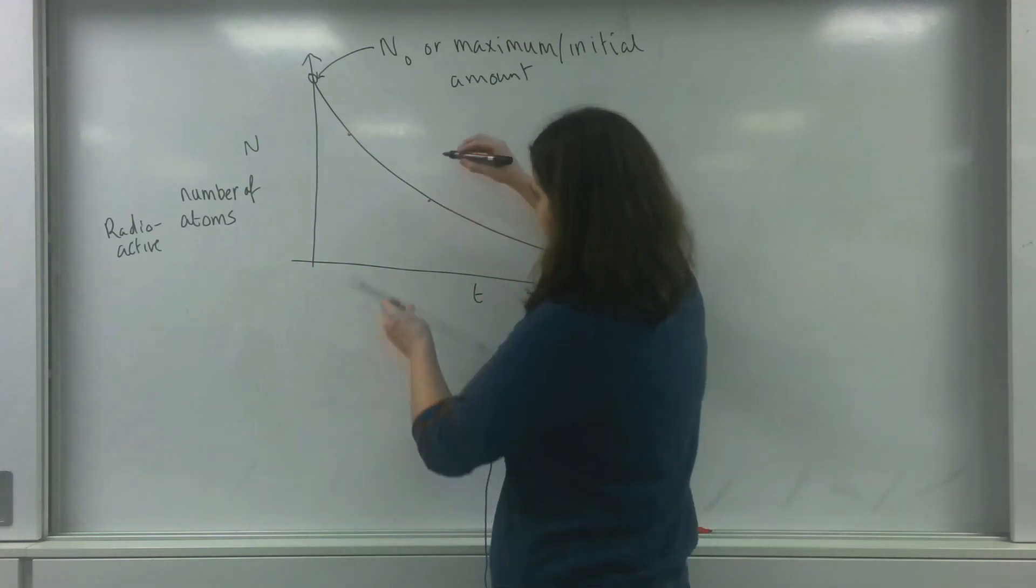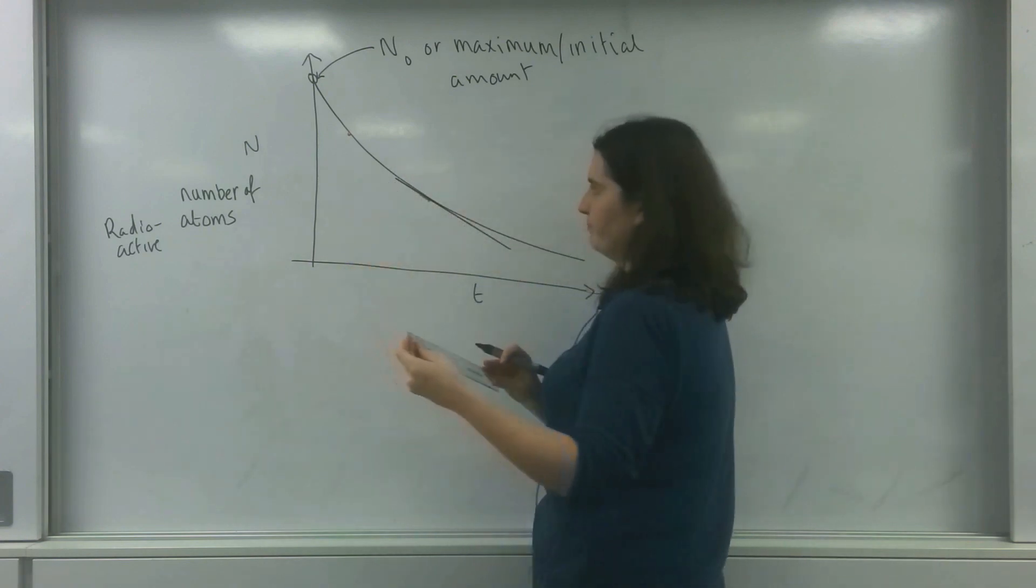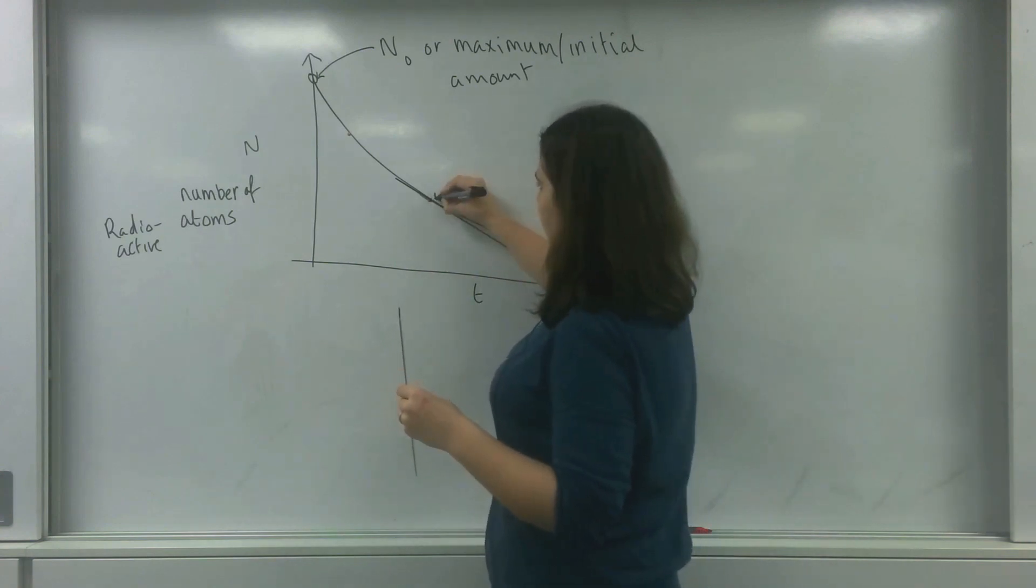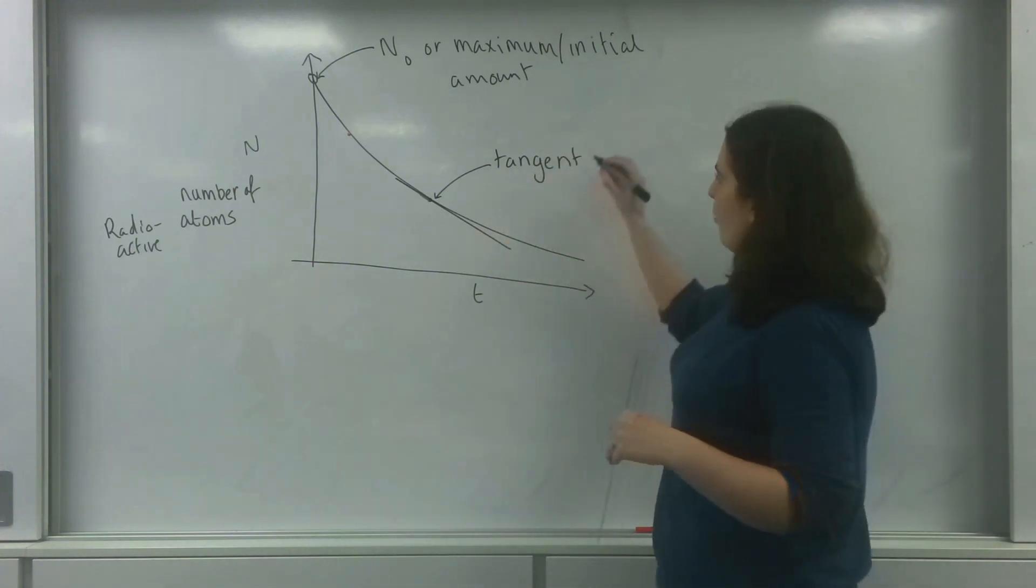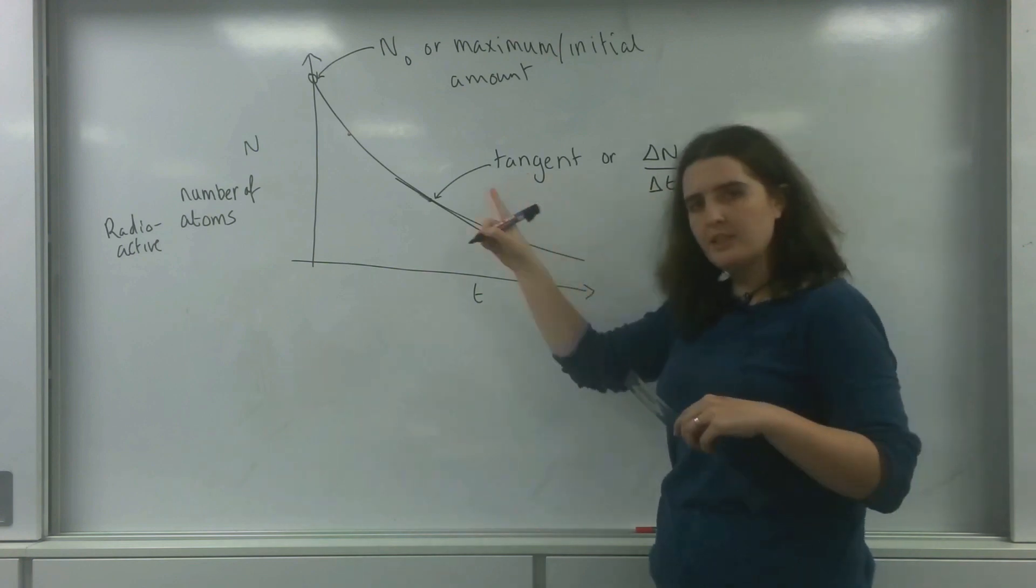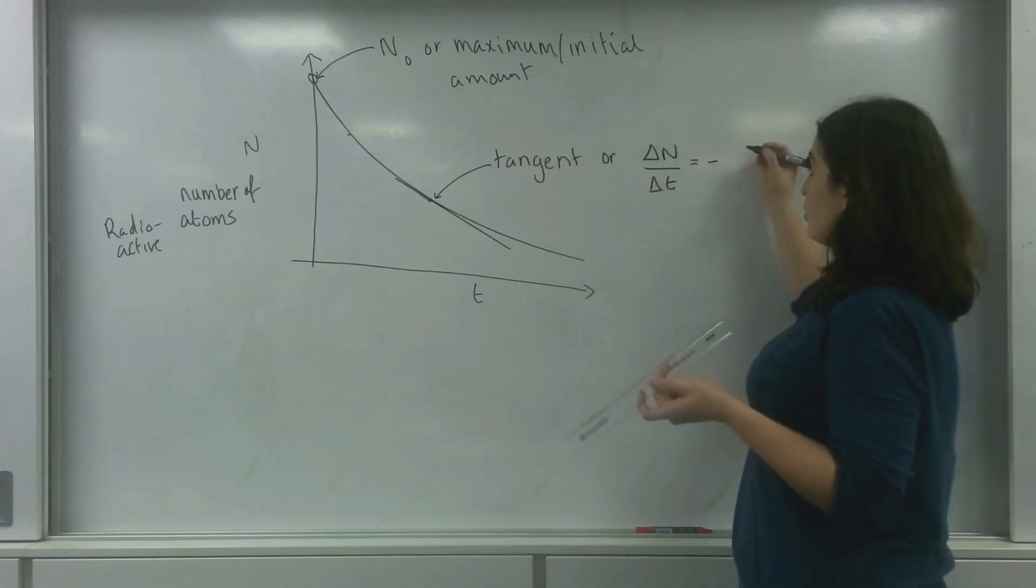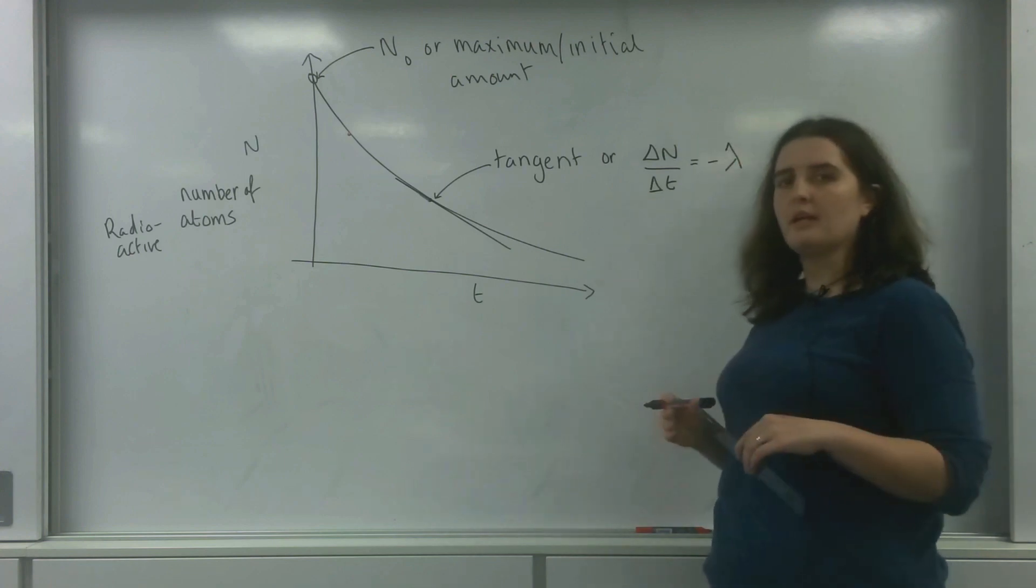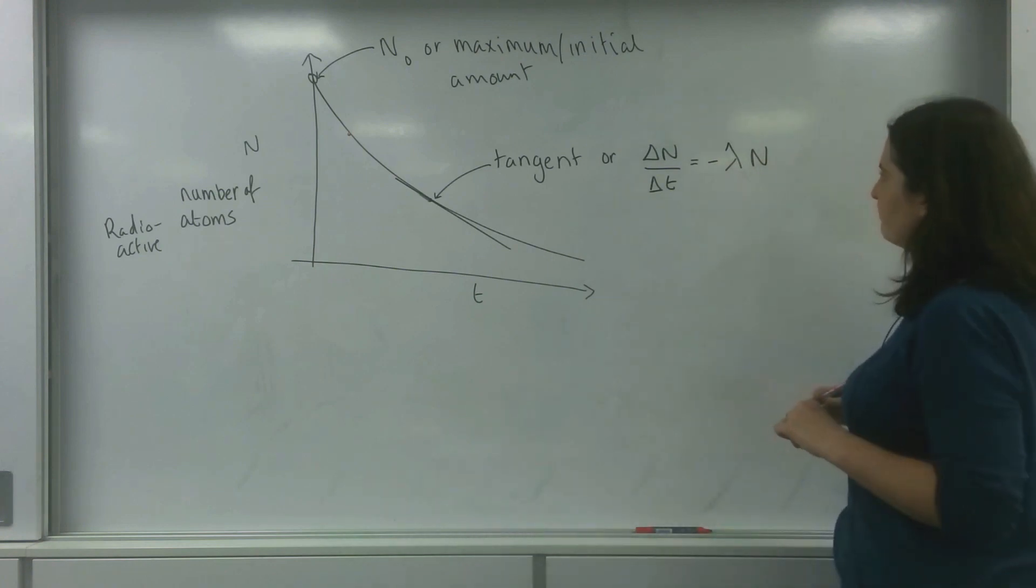So I'm going to take this point here and draw a tangent there. This is the gradient at this point here, so the change in n over the change in t for this position. That is going to be negative because it is a negative gradient, times a constant. In this case I'm going to use lambda. Times by the value of n I have there.